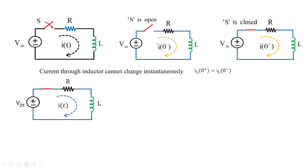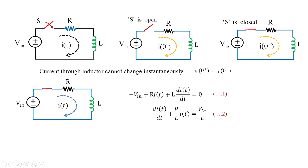When the switch is closed, applying KVL to the closed RL circuit gives the voltage equation: the voltage across the resistor is R·i(t), and the voltage across the inductor is L·di(t)/dt, and together they equal Vin. Rearranging gives di/dt + (R/L)·i(t) = Vin/L, which takes the form of a non-homogeneous differential equation.